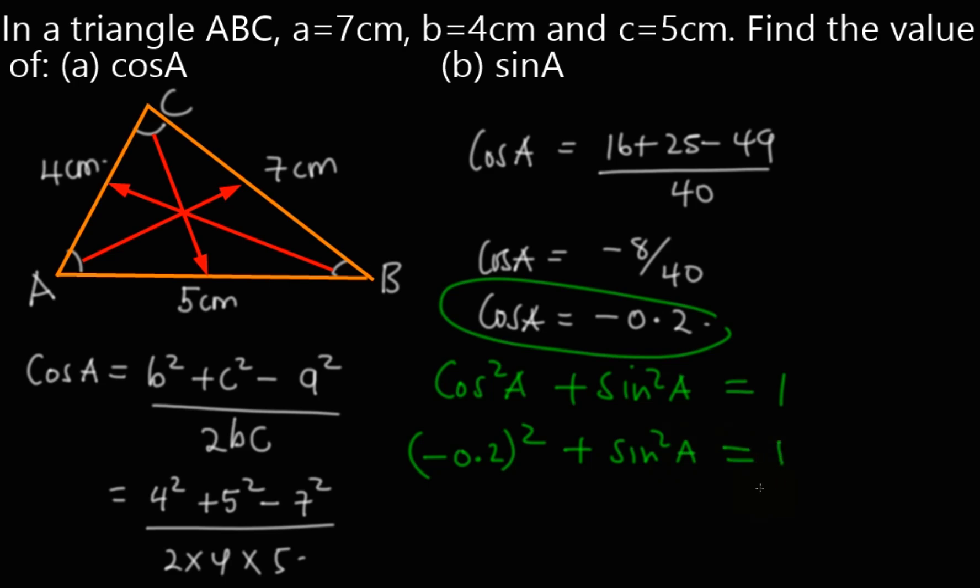(-0.2)² = 0.04 + sin²A, everything is equal to 1. We carry 0.04 to the right-hand side.